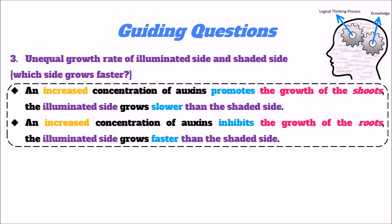In Question 3, when talking about the unequal growth rate, we must specify which side grows faster. For the shoot: an increased concentration of auxin promotes shoot growth, so the illuminated side grows slower than the shaded side — or equivalently, the shaded side grows faster than the illuminated side. For the root: an increased concentration of auxin inhibits root growth, so the illuminated side grows faster than the shaded side.